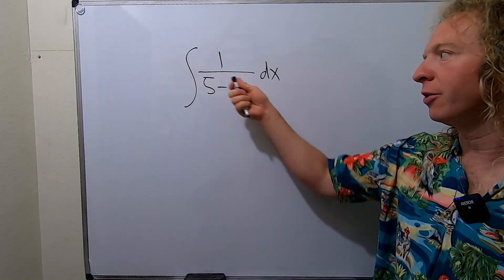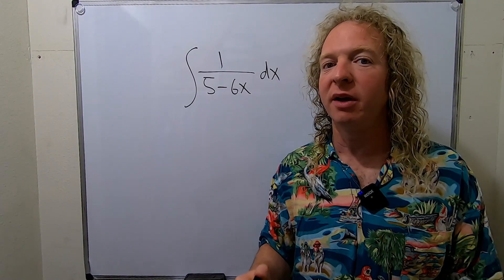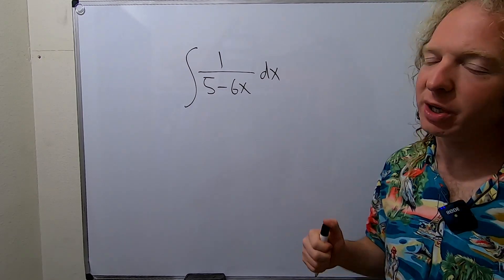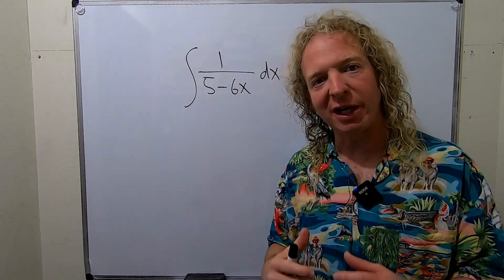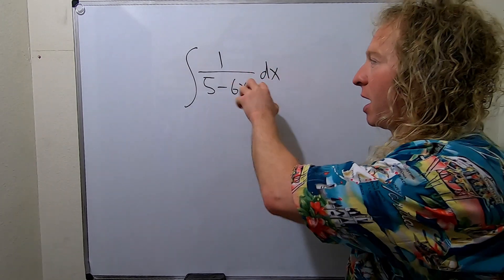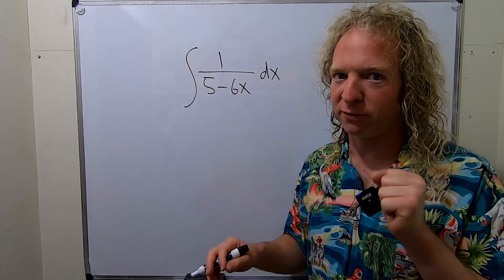In this video we're going to integrate 1 over 5 minus 6x. In order to do this problem we're going to do a u substitution. So we'll start by letting u be the piece on the bottom so that we can use a familiar formula.